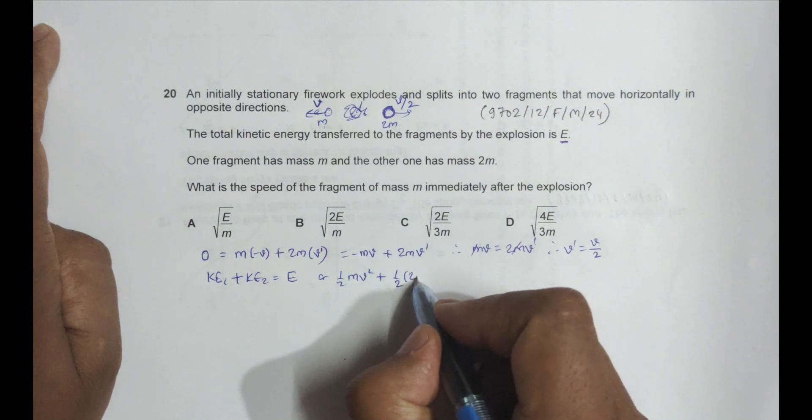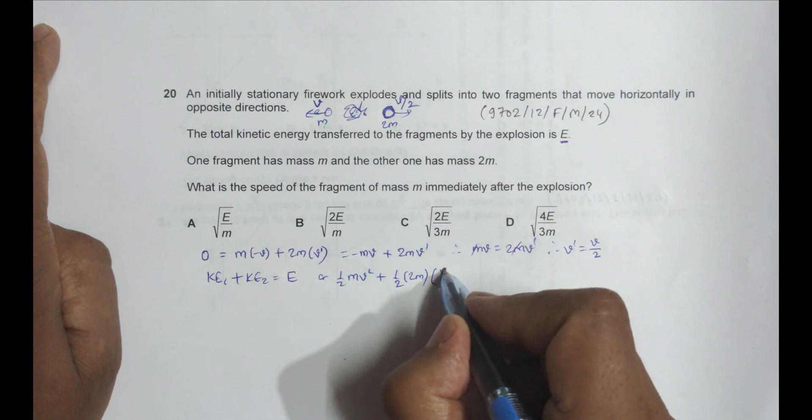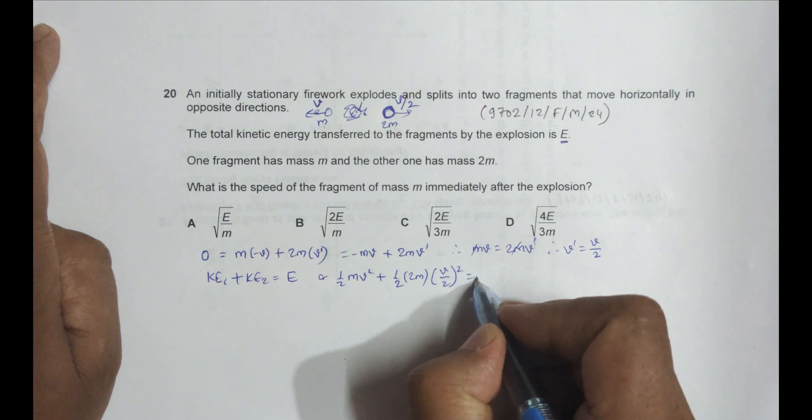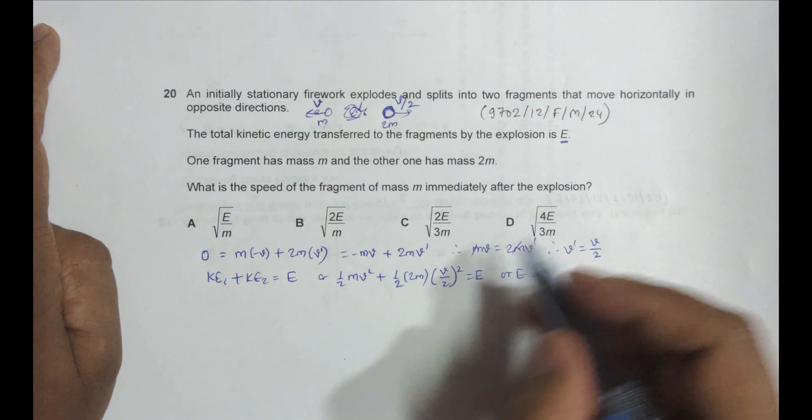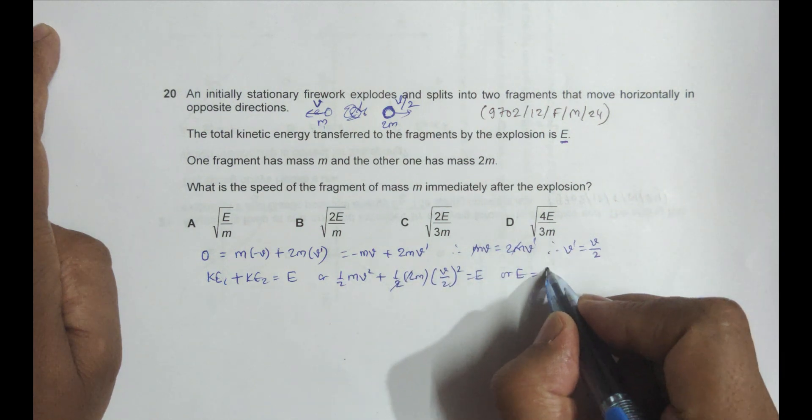Now let's do the mathematics here. This 2 and 2 goes, so it is still MV²/2 for the first one, and the second one is MV²/4.